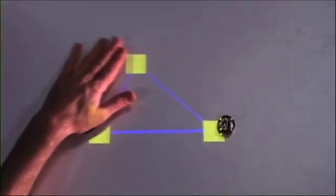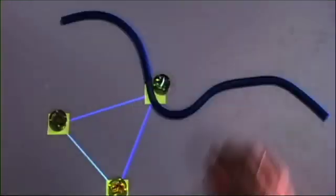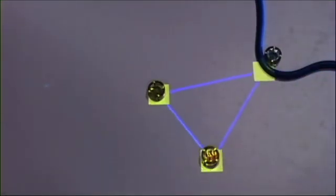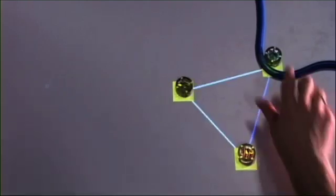So I built this table that moves objects around on top of it using an array of electromagnets. And so the computer collaborates with you to try to help you perform whatever task you're doing. In this case we're trying to make an equilateral triangle. But you can reach in and guide that process however you want with your hands.